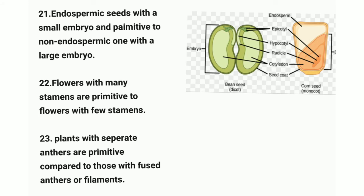Point twenty-one: endospermic seeds with a small embryo are primitive compared to non-endospermic seeds with a large embryo. Castor bean is an example of an endospermic seed. Bean and gram seeds are examples of non-endospermic seeds, in which the endosperm is absorbed by the cotyledon, causing it to swell.